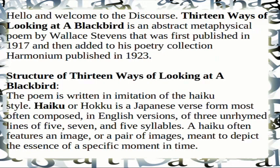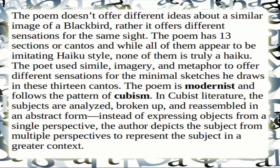The poem is written in imitation of the haiku style. Haiku is a Japanese verse form most often composed in English versions of three unrhymed lines of five, seven, and five syllables. A haiku often features an image or a pair of images meant to depict the essence of a specific moment in time. The poem has 13 sections or cantos, and while all of them appear to be imitating haiku style, none of them is a truly traditional haiku.